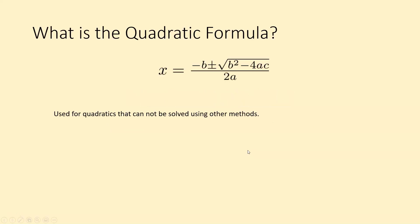What is the quadratic formula? The quadratic formula is x equals negative b plus or minus square root of b squared minus 4ac all over 2a. The quadratic formula is used to solve quadratics that you can't solve using the other methods we've talked about, whether that be factoring or solving by inspection using square roots. You can use the quadratic formula to solve any quadratic, but it's most useful for those quadratics you can't solve using other methods.